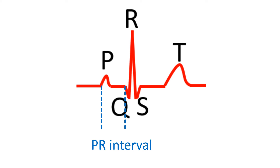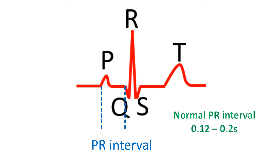Next is the PR interval, measured from the onset of the P wave to the onset of the QRS complex. The QRS complex is due to electrical activity of the ventricles. The PR interval represents the time taken for electrical signals to conduct from the uppermost part of the atria to the beginning of the ventricles. The normal range of PR interval in an adult is 0.12 to 0.2 seconds.